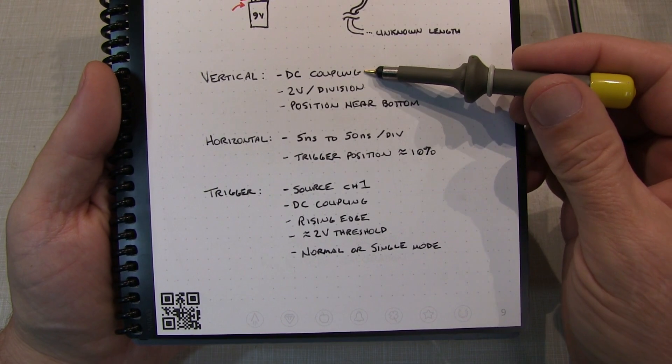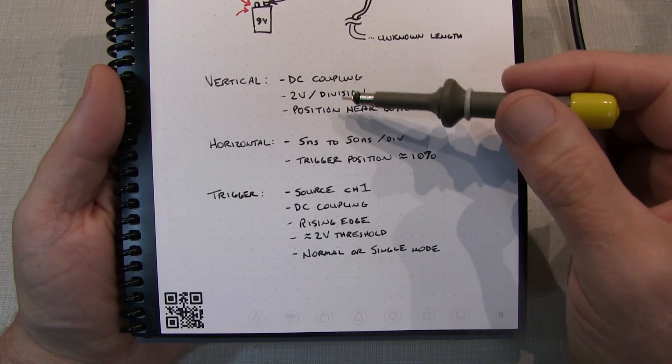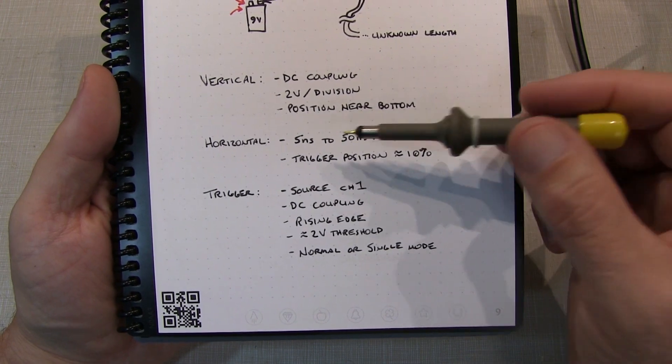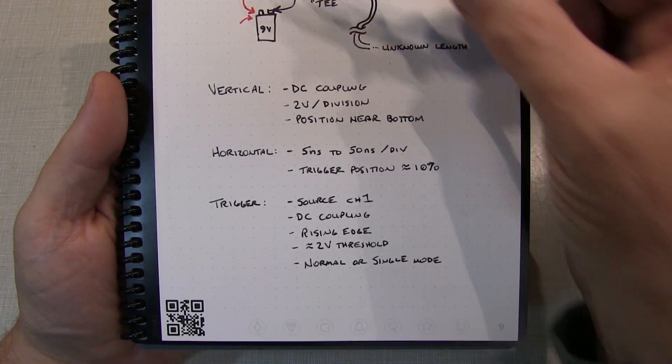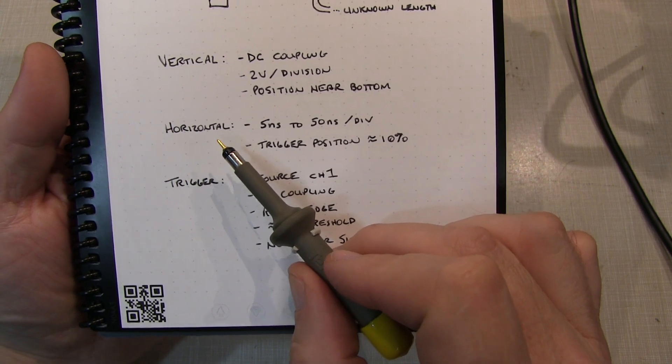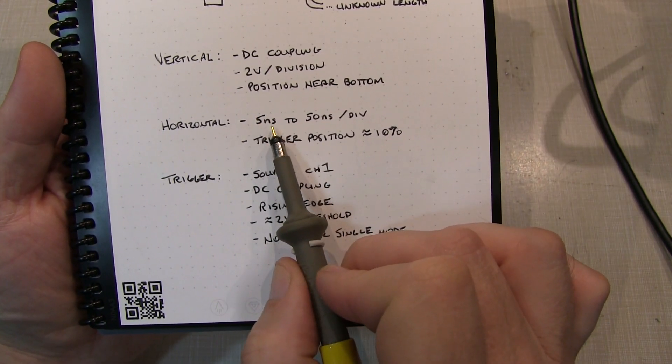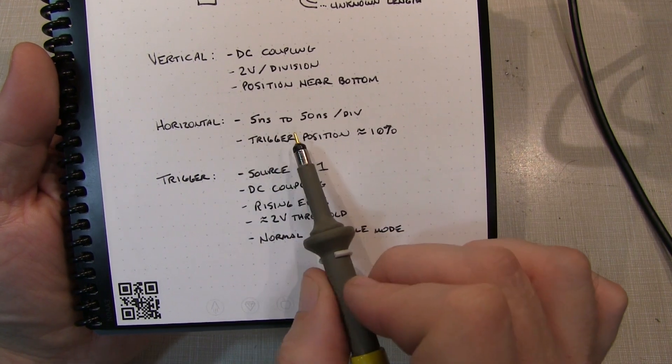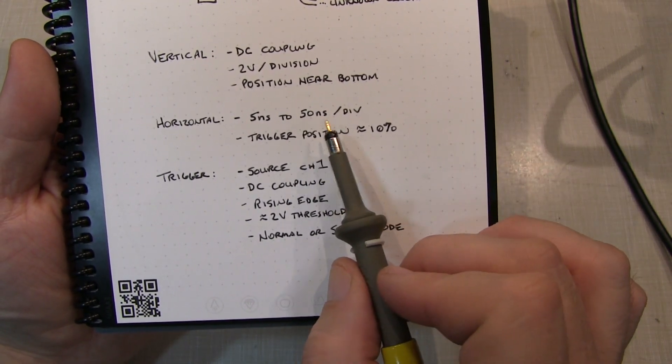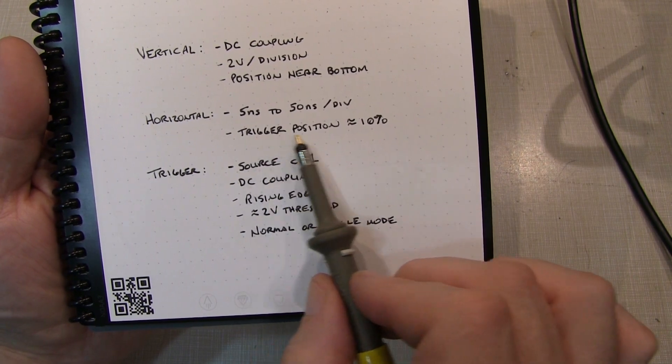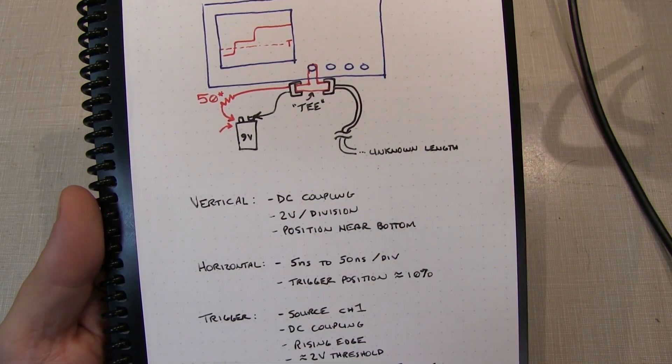Now the basic setup for the scope is your DC coupling, the input. And if you're using a 9-volt battery, 1 or 2 volts per division, so that your full 9 volts will appear on screen. And then set the position down near the bottom, so that you start off down here at ground, and then your 9 volts goes up that way. Now your horizontal settings are really going to depend a lot on the length of the line you're trying to measure, so you'll have to adjust this accordingly, but typically maybe 5 nanoseconds per division for the shortest lines, like a couple of feet long, up to maybe 50 or 100 nanoseconds per division, or maybe longer for really long lines, maybe up to 100 feet or more. And then the trigger position, you want to set that near 10%, meaning kind of close to the left edge of the display, so you can see the waveform play out towards the end.